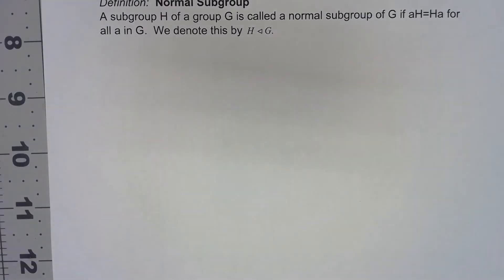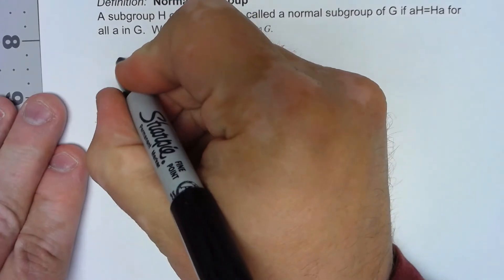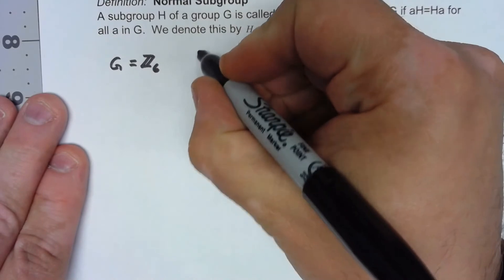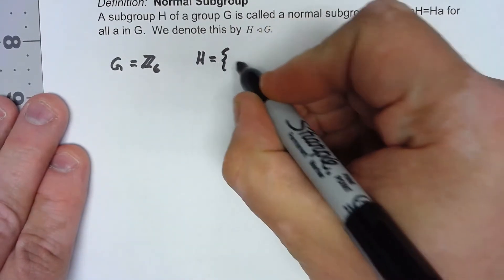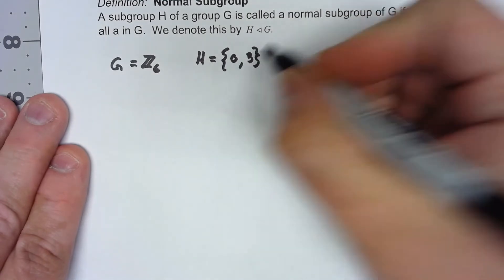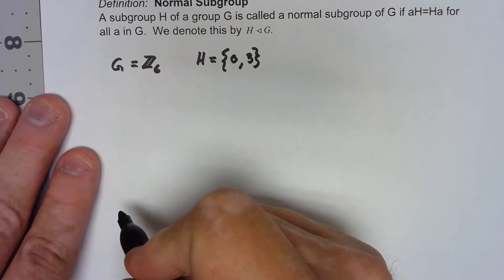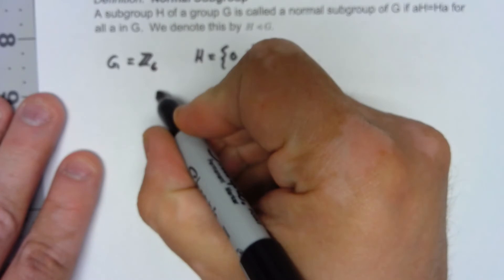Let's take a look at a couple of examples. Let's start with the group G equals Z6 and the subgroup H equals the set {0,3}. If we look at the coset 0 plus H, we get the set {0,3}, which is just H or H plus 0.